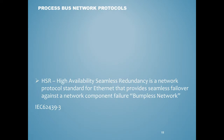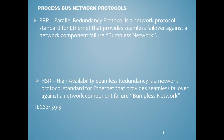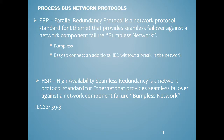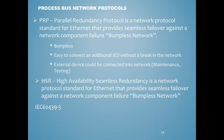For process bus network protocols, PRP — Parallel Redundancy Protocol — is one of the most favorable protocols for process bus. It's a network protocol standard for Ethernet that provides seamless failover against network component failure. It's a bumpless network, easy to connect additional IEDs without breaking the network. HSR — High-availability Seamless Redundancy — is not as favorable; in fact, some manufacturers don't even provide the capability. I'll get into why based on its architecture.